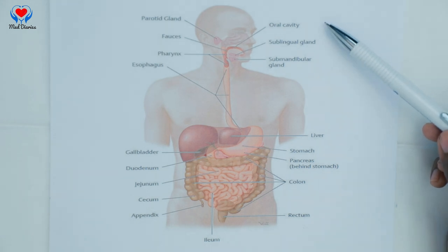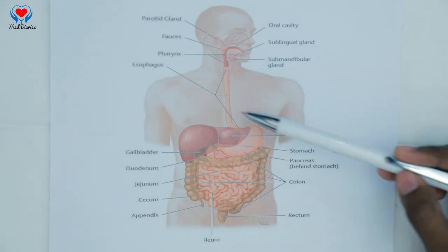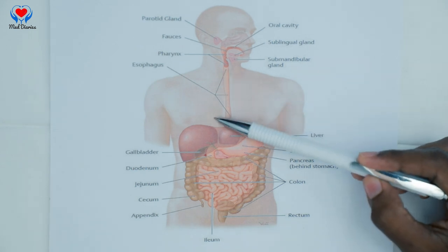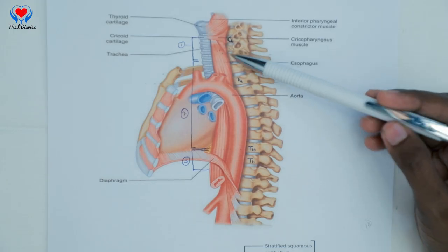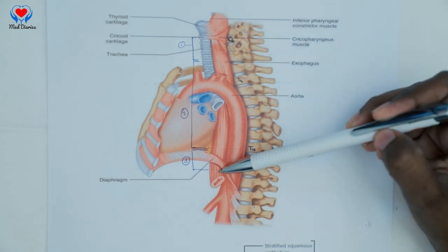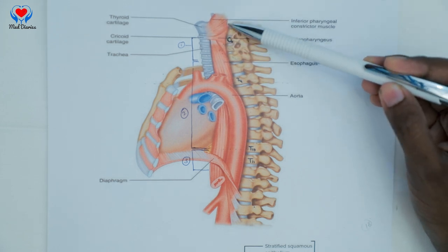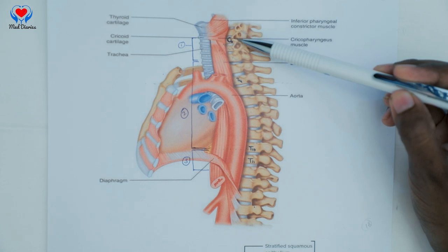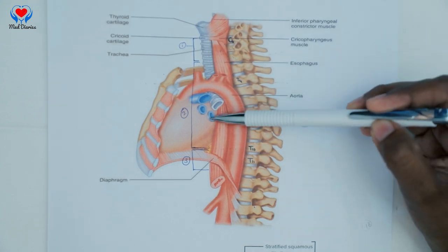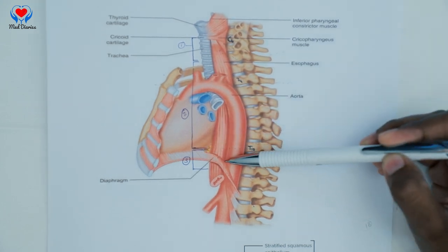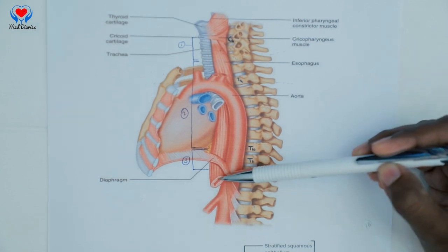First of all, for a brief introduction, the esophagus is a long narrow muscular tube forming the food passage between the oropharynx and the stomach. It is nearly 25 centimeters in length. The esophagus begins in the neck in front of the pre-vertebral fascia at the lower border of the cricoid cartilage, then descends from the superior mediastinum to the posterior mediastinum, pierces the diaphragm at the level of T10 vertebra, and opens into the stomach by the cardiac orifice at the level of T11.